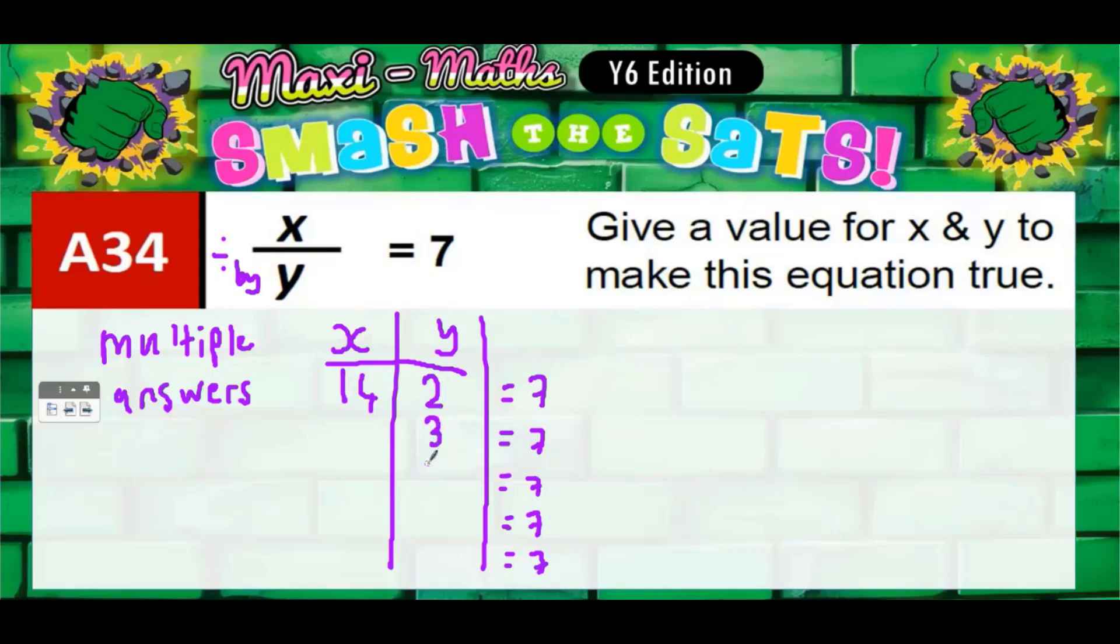What could be - let's say y would be 3. It's almost easier to pick the y number first and then think about what x would have to be. So what number divided by 3 would give us 7? Well, 3 times 7 will give us 21, so it would have to be 21. 21 divided by 3 give you 7.